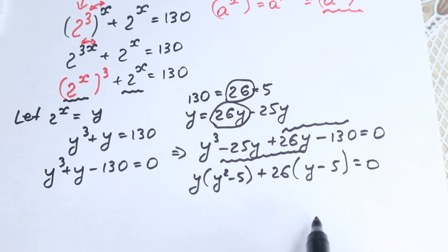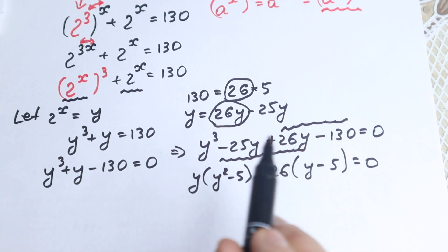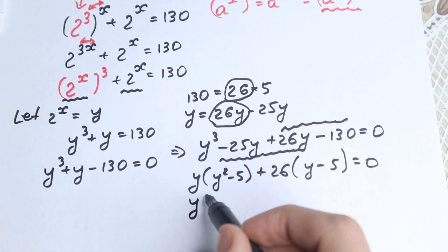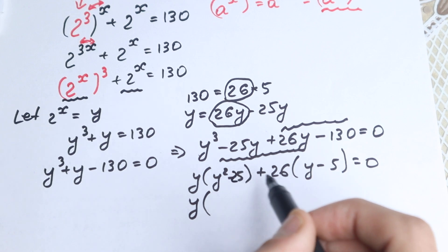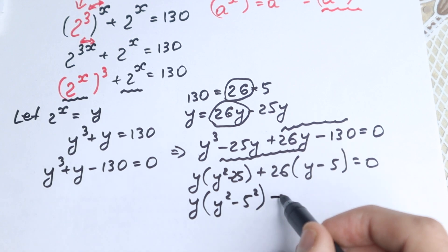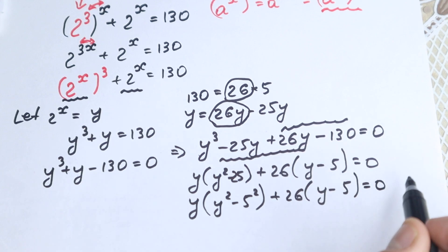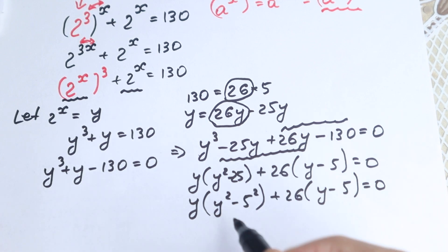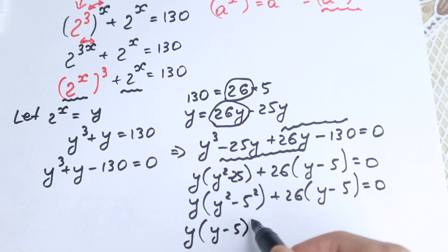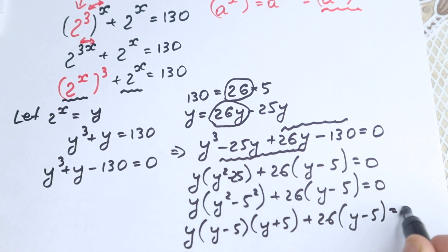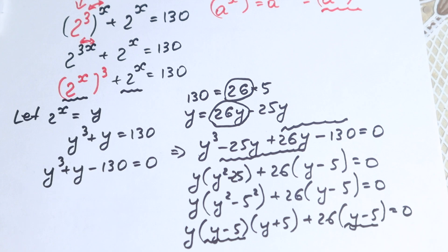Right now we can easily factor (y minus 5). But with an interesting moment — we need to write this identity formula. So we have y times (y squared minus 5 squared), which factors as y times (y minus 5)(y plus 5), plus 26 times (y minus 5), equals 0. Take a look: (y minus 5) appears in both terms, so we can factor it out.